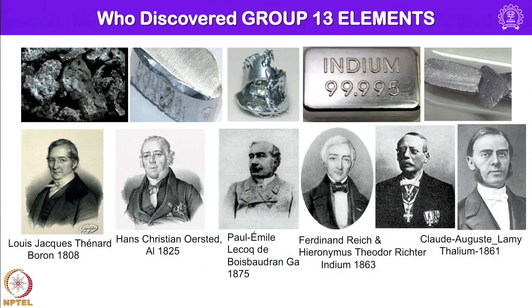Boron was discovered by Louis Jacques Thénard, then isolated in pure form by Humphrey Davy. Aluminum was discovered in 1825 by Hans Christian Ørsted. Gallium was discovered by Paul Émile Lecoq de Boisbaudran in 1875. Indium was discovered by Ferdinand Reich and H.T. Richter in 1863, and thallium was discovered by Claude Auguste Lamy in 1861. You can always go to Wikipedia to know more about these elements and the history of discovery.